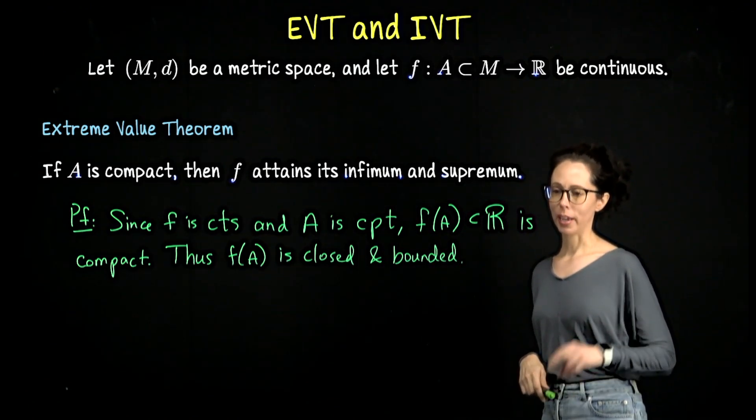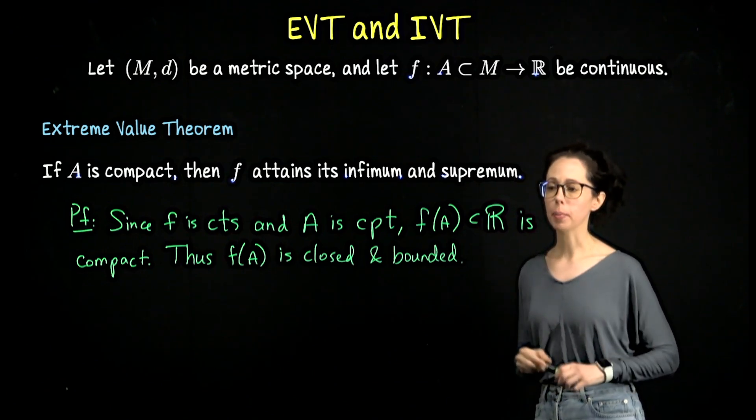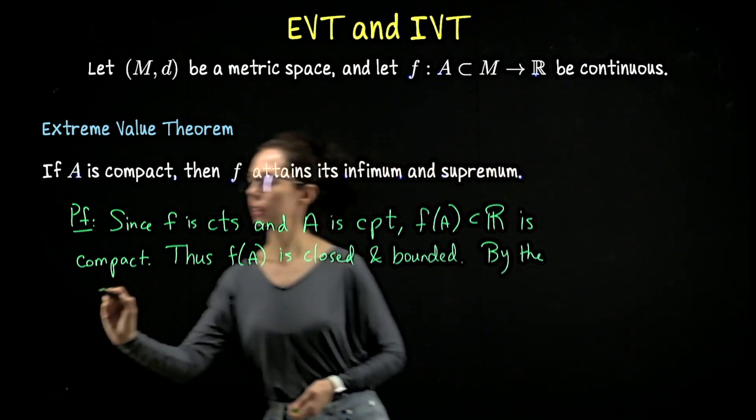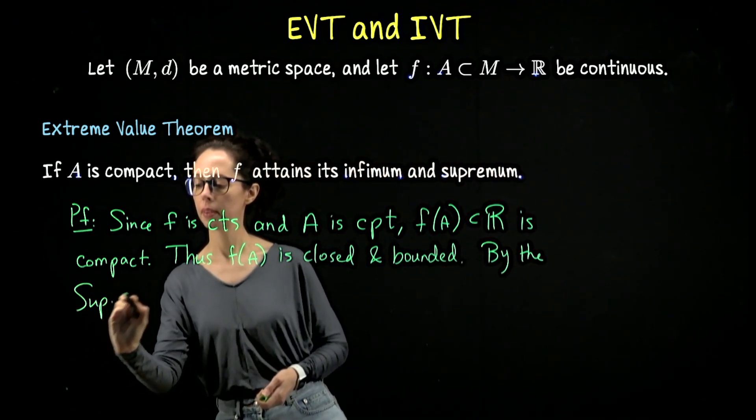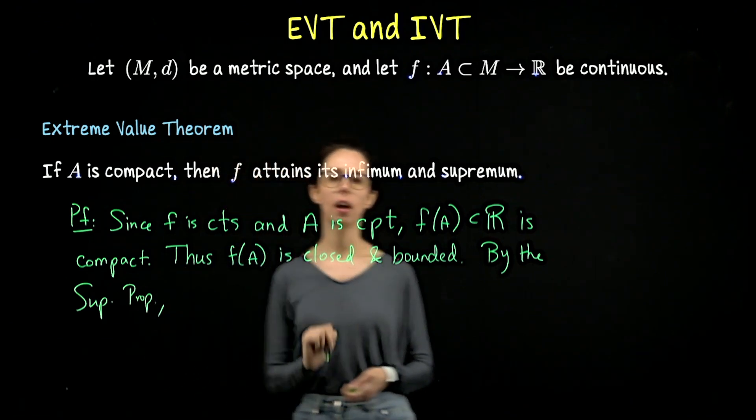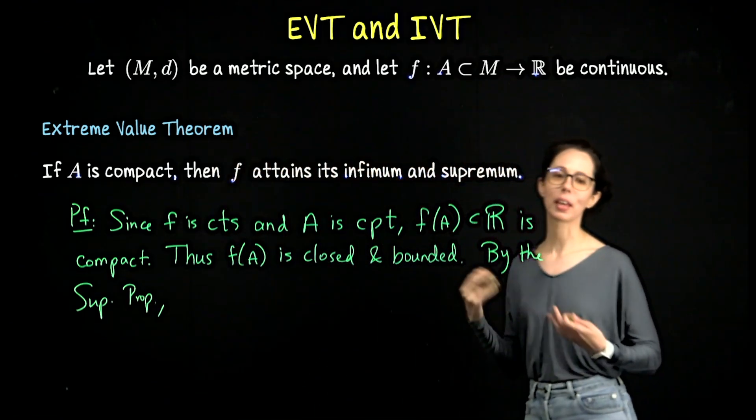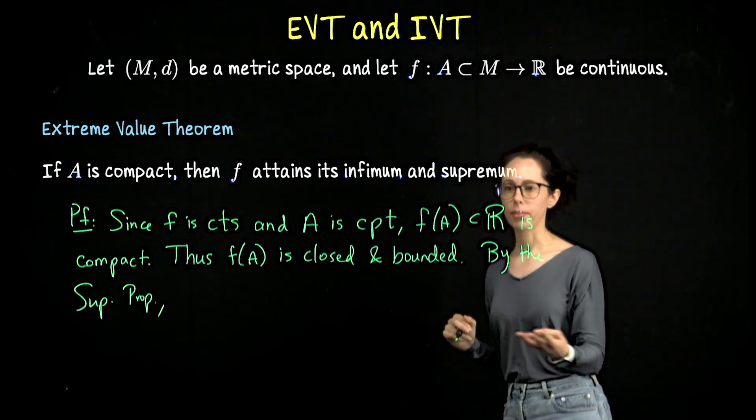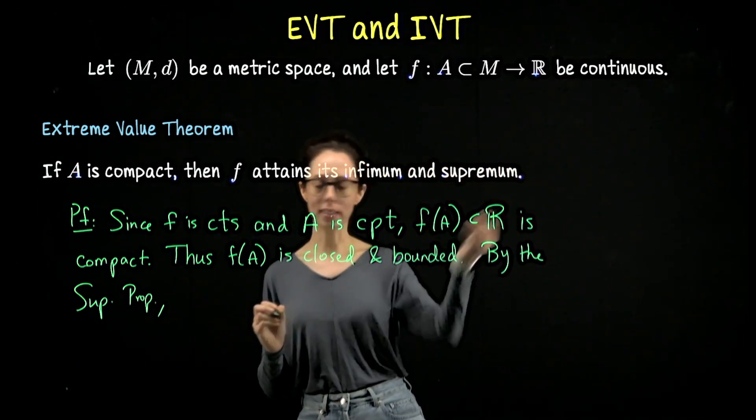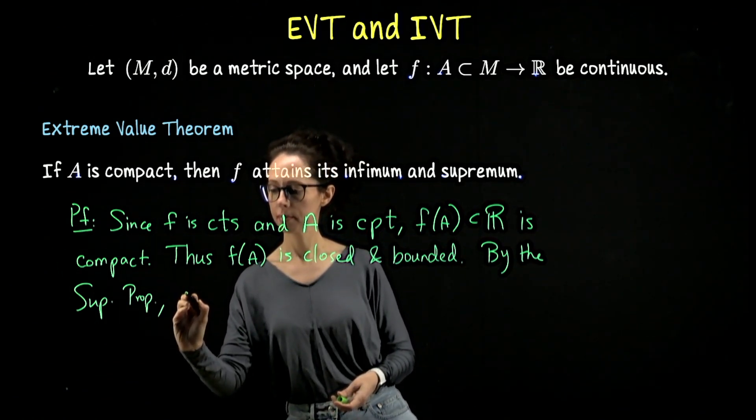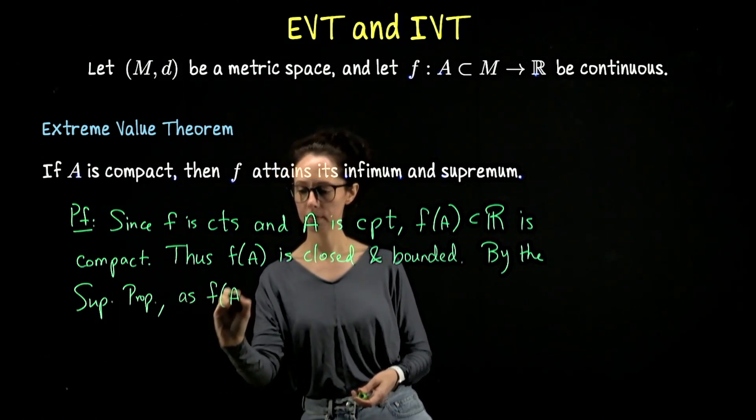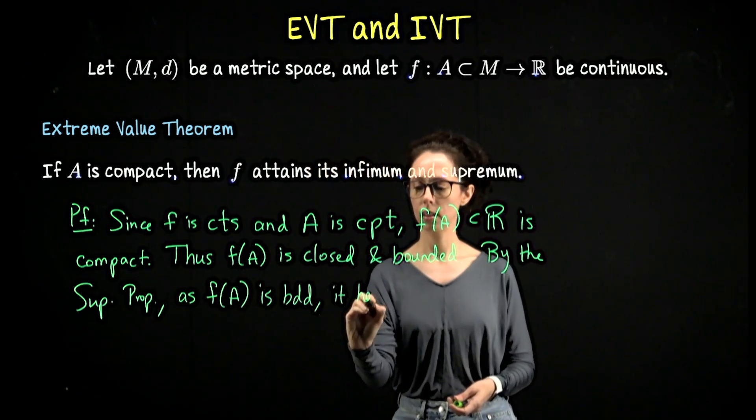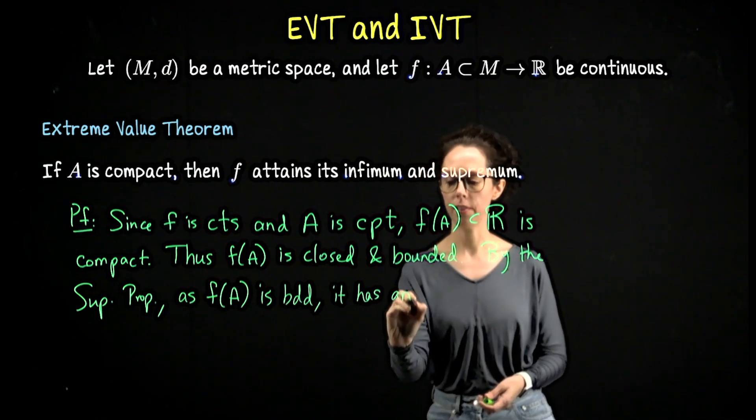It is a bounded subset of R. By the supremum property, it has an infimum and supremum. Every set which is bounded above on R has a least upper bound and likewise a greatest lower bound. So by the sup property, since A is bounded, it has an infimum and supremum. These numbers exist.